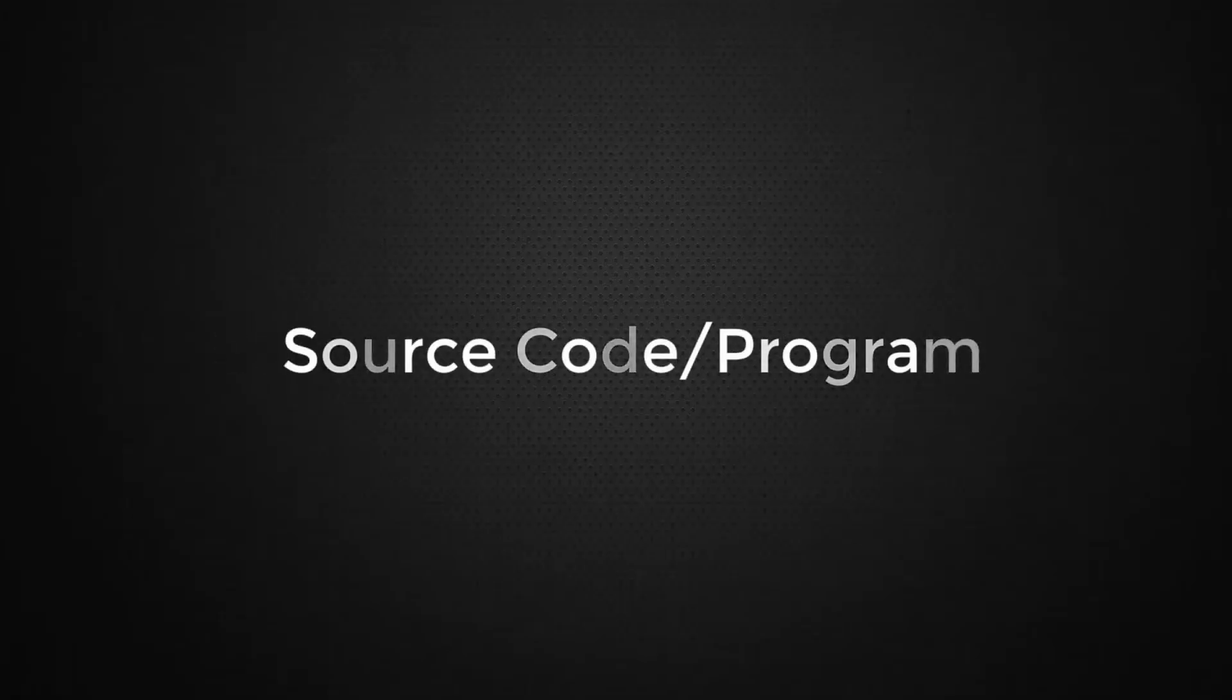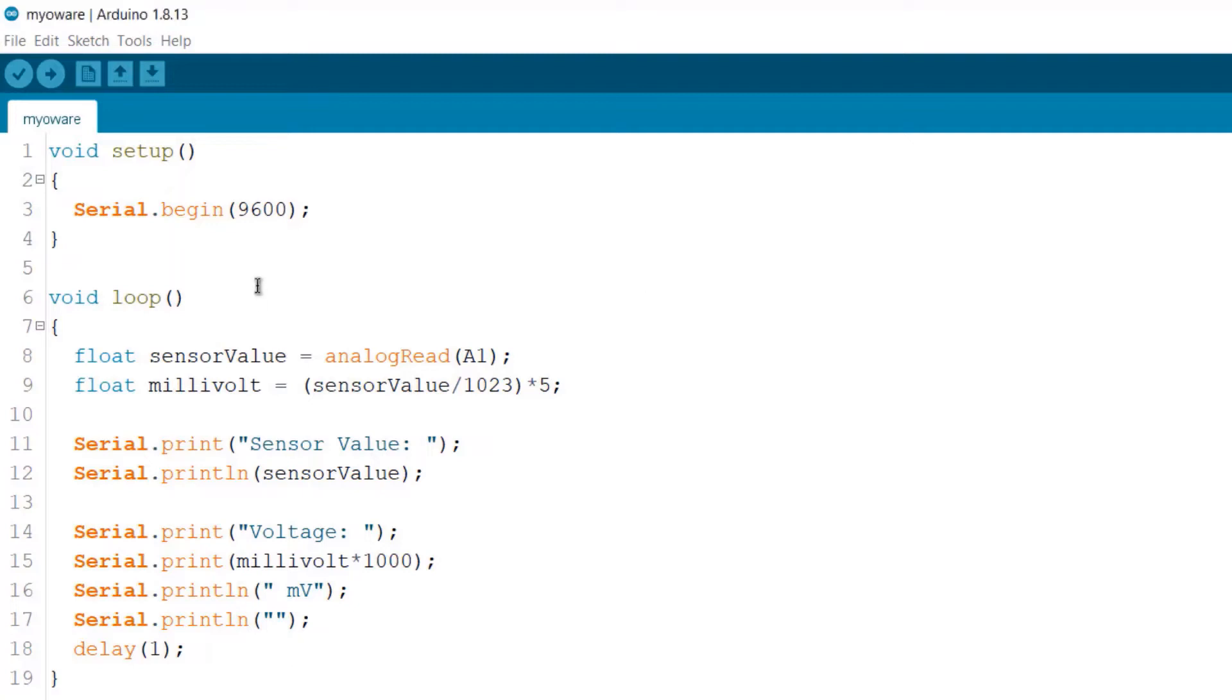Now, let's move to the programming part. The programming here is simple. Under the setup, we are initializing the serial begin and setting the baud rate like 9600. In the loop part, we are measuring the sensor value by reading the analog data from the A1 pin. Then using this line, we are converting the sensor value to voltage. Then we are printing the sensor value and also the voltage value on the serial monitor. You need to use a delay of 1ms here.